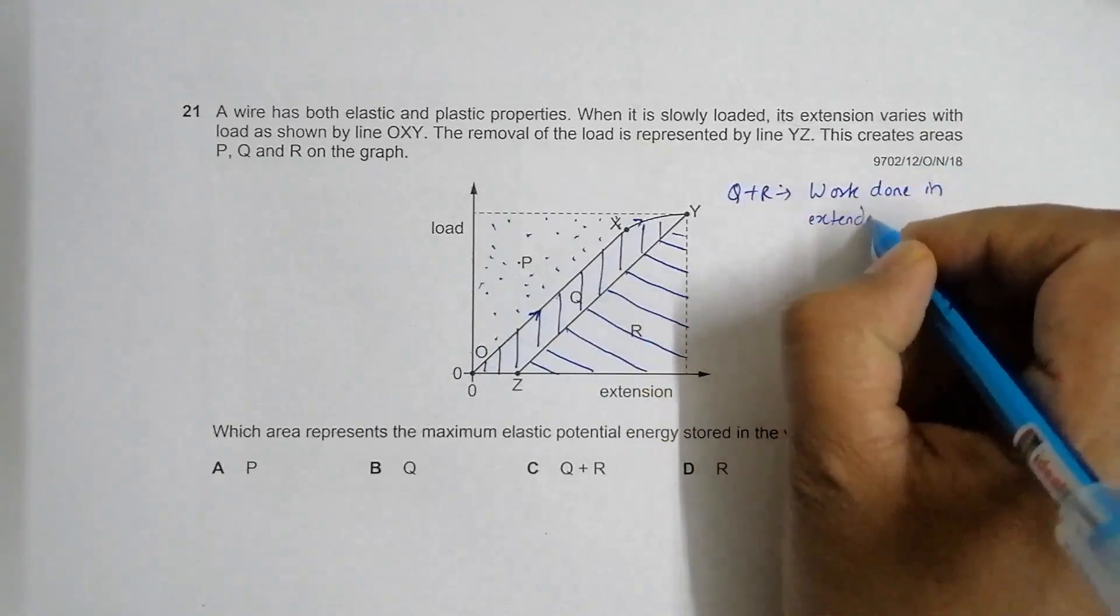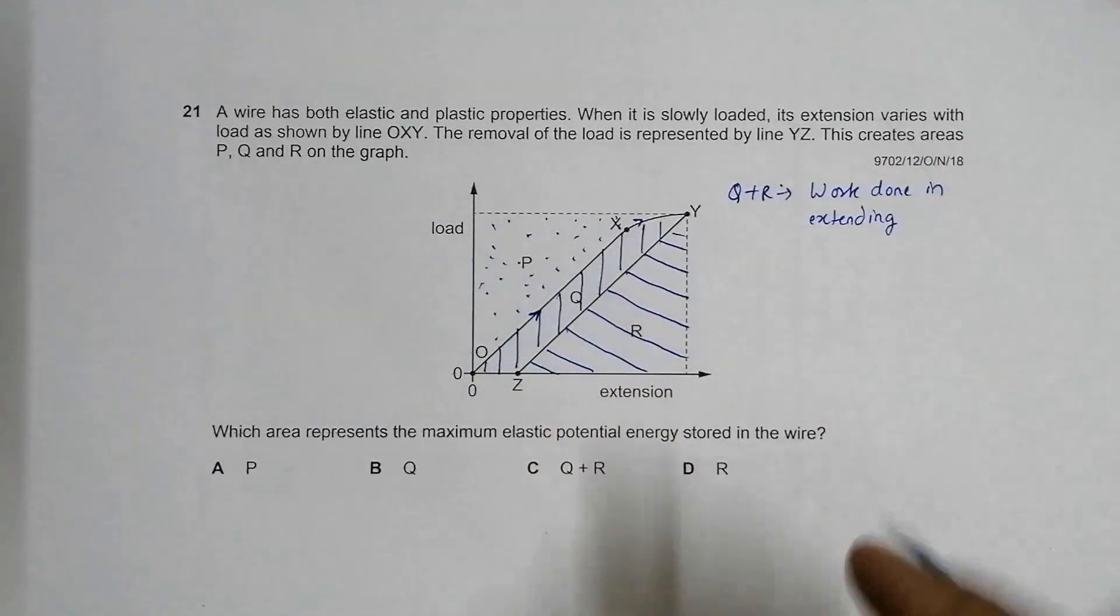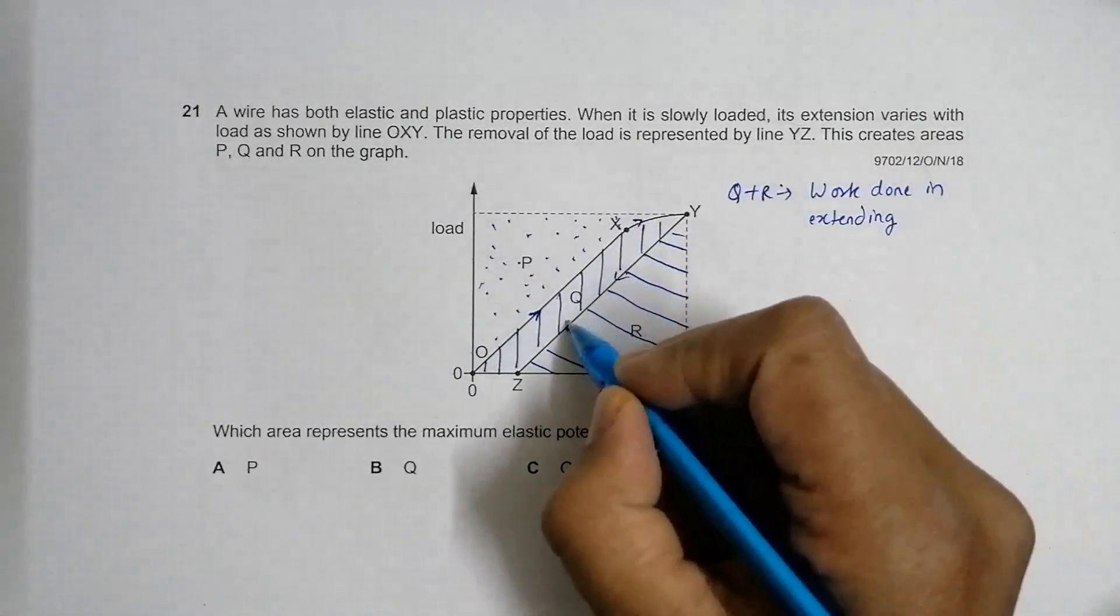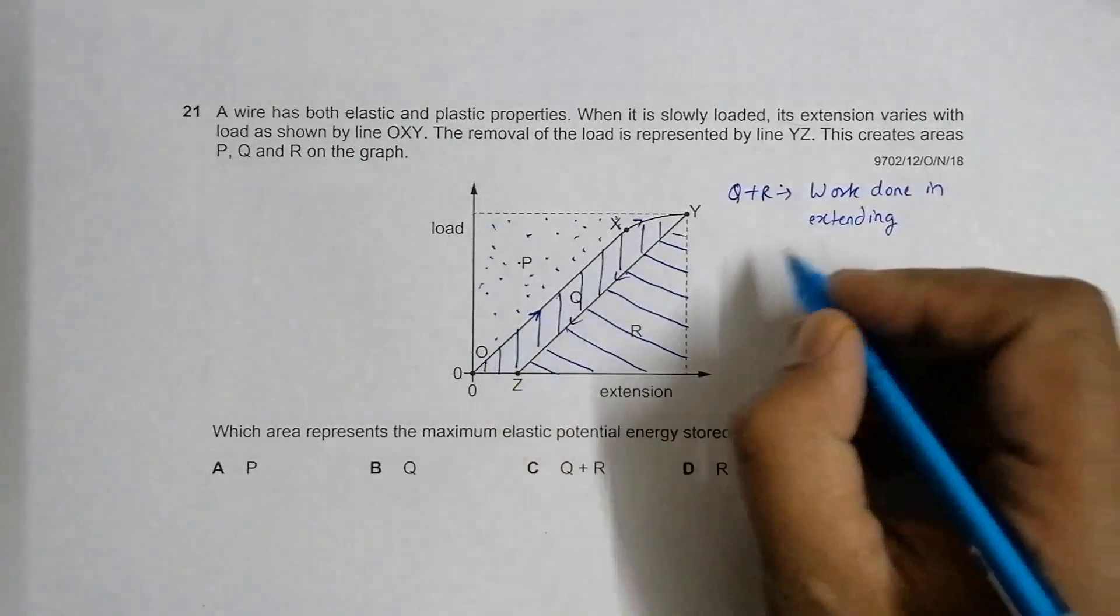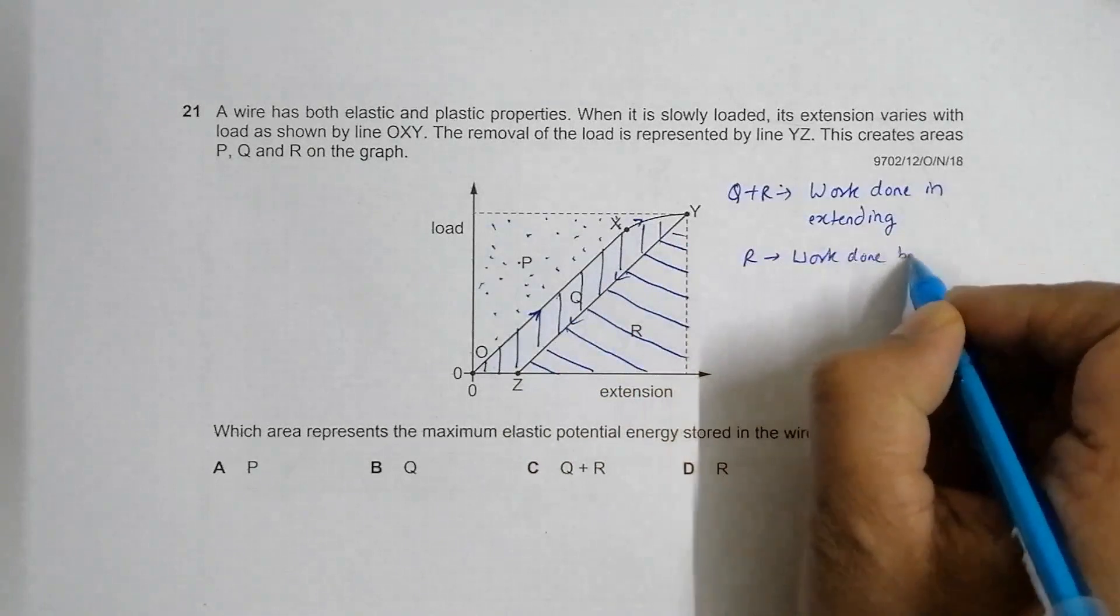When I allow it to return, it comes back like this. Area R equals the work done by the wire while it contracts.